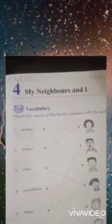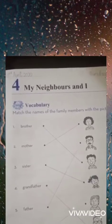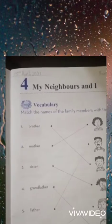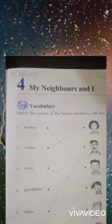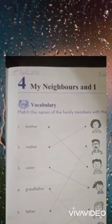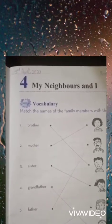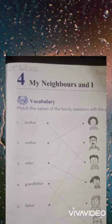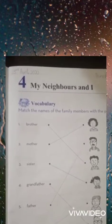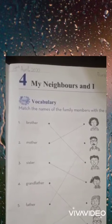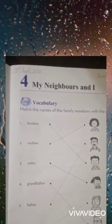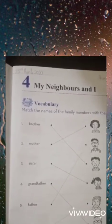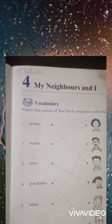First of all, I'm going to define what is family. Family is defined as a specific group of people that may be made up of partners, children, parents, aunts, uncles, cousins, and grandparents. An example of a family is a set of parents living with their children — a group of people who are related to each other, such as a mother, father, and their children.